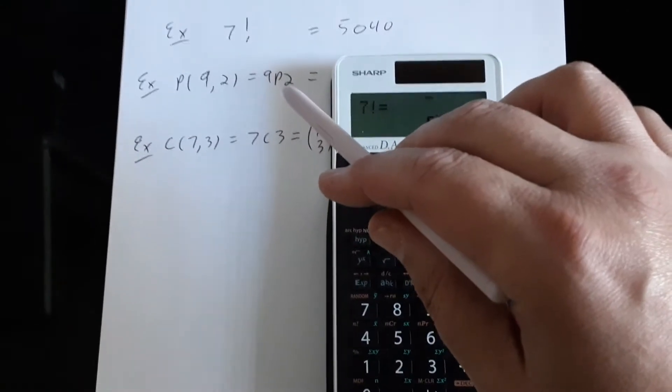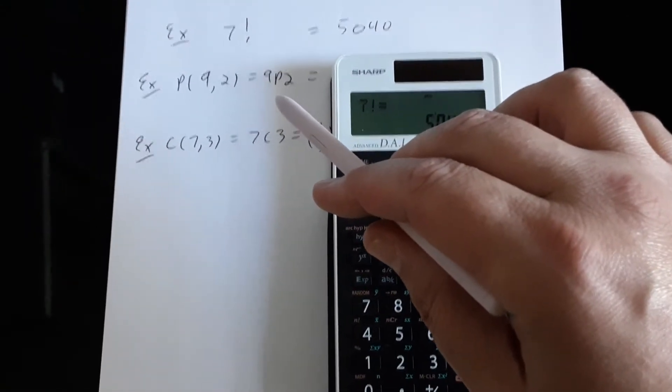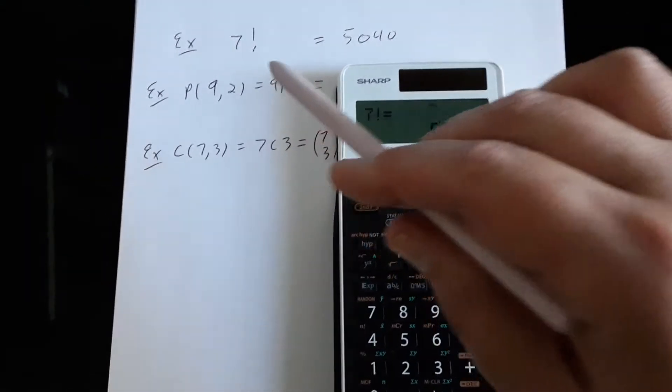They both mean taking nine distinct objects, selecting, and arranging two out of the nine objects.